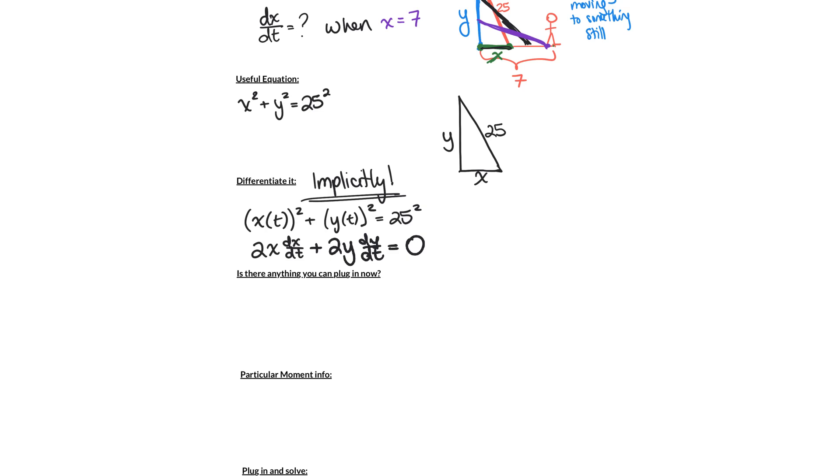Alright, so now we have an equation in four unknowns. Make sure you see all four of these unknowns. We have an x, we have a dx/dt, we have a y, and we have a dy/dt. And this is an equation that's true for the entire story that we're telling. If you think of it like a movie, it's like the entire movie as the ladder falls, this equation is true. And are there any things that we can plug in now that's true for the entire story? Yes, there is. We know that during the entire time dy/dt is equal to negative one. So let's go ahead and plug that in.